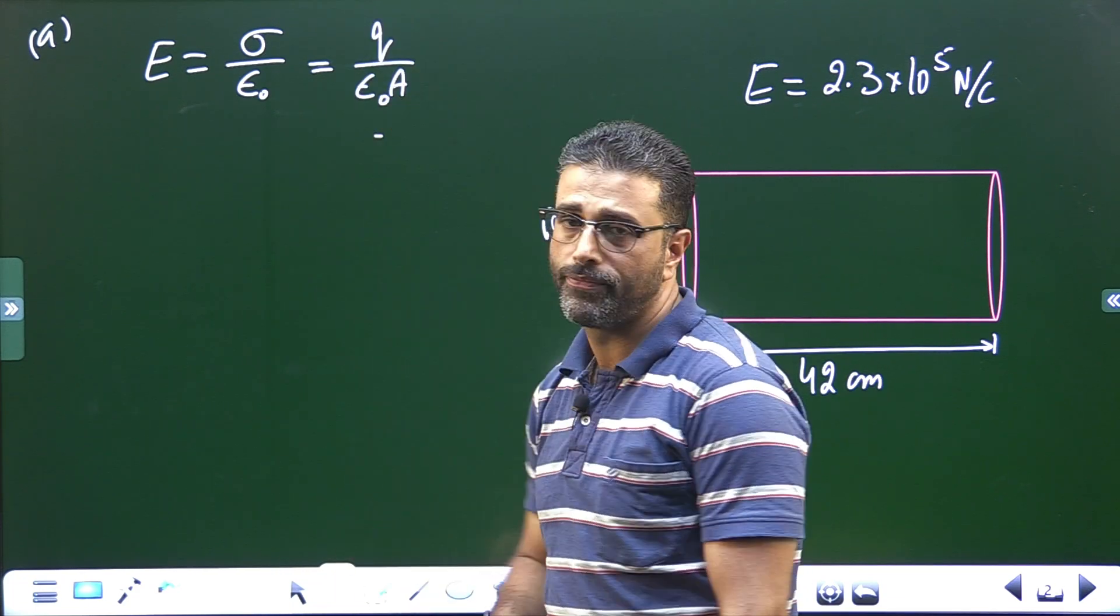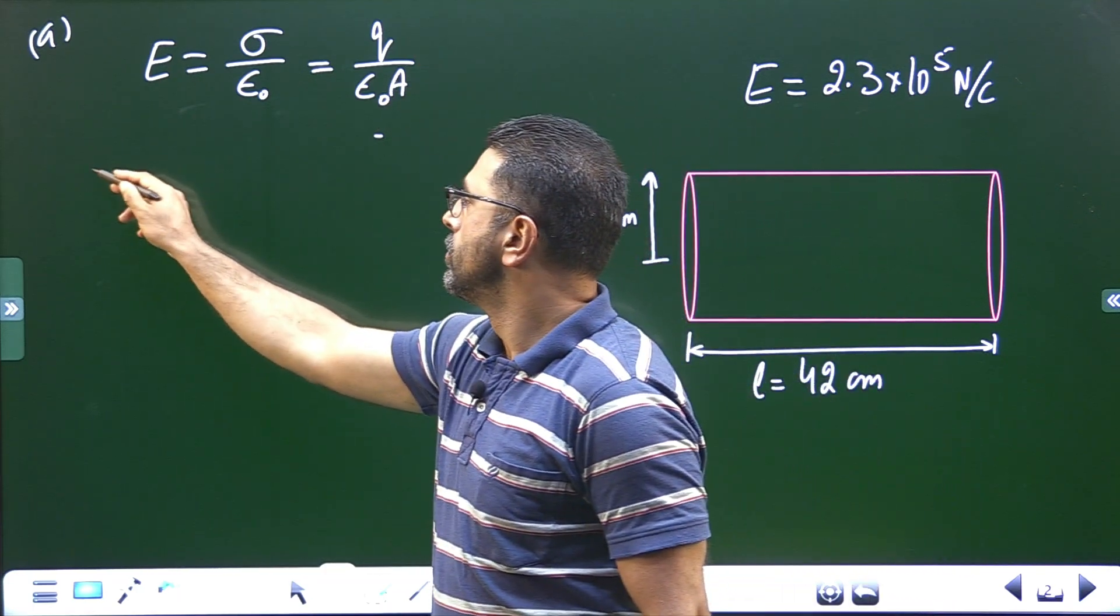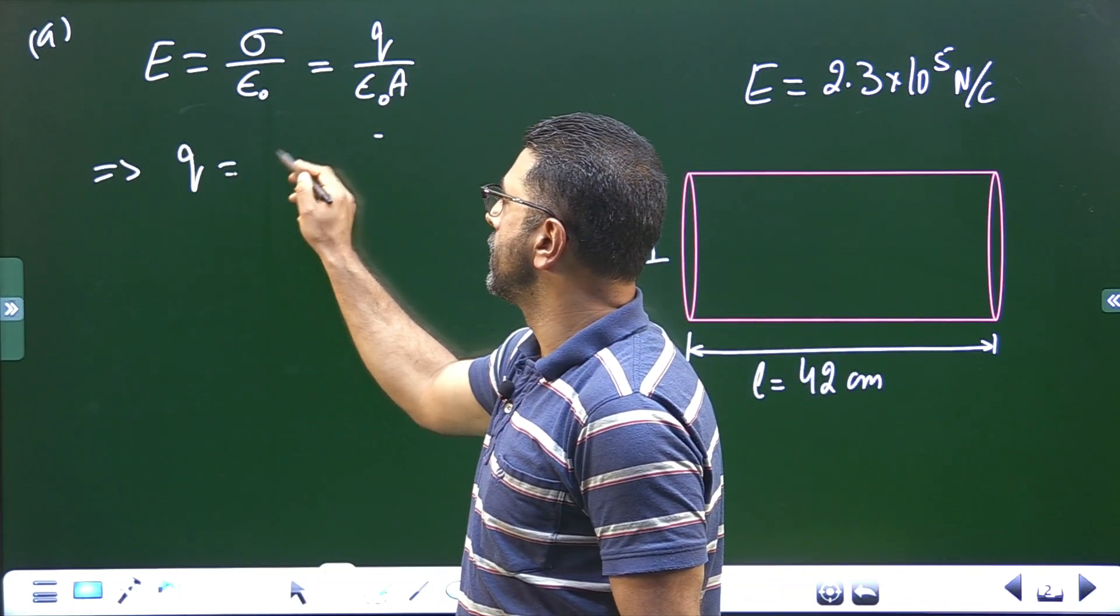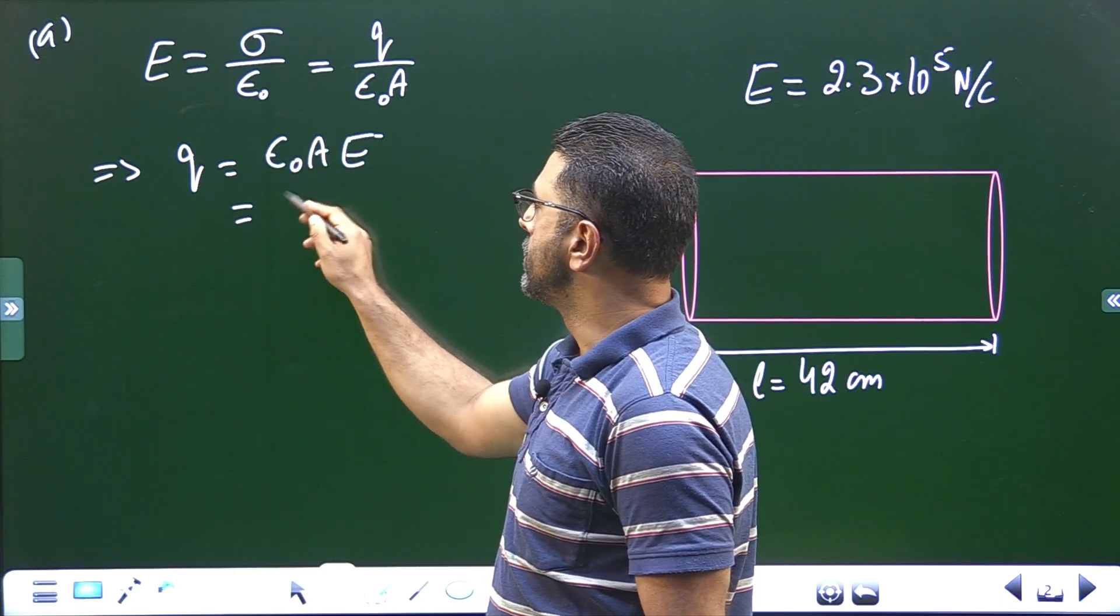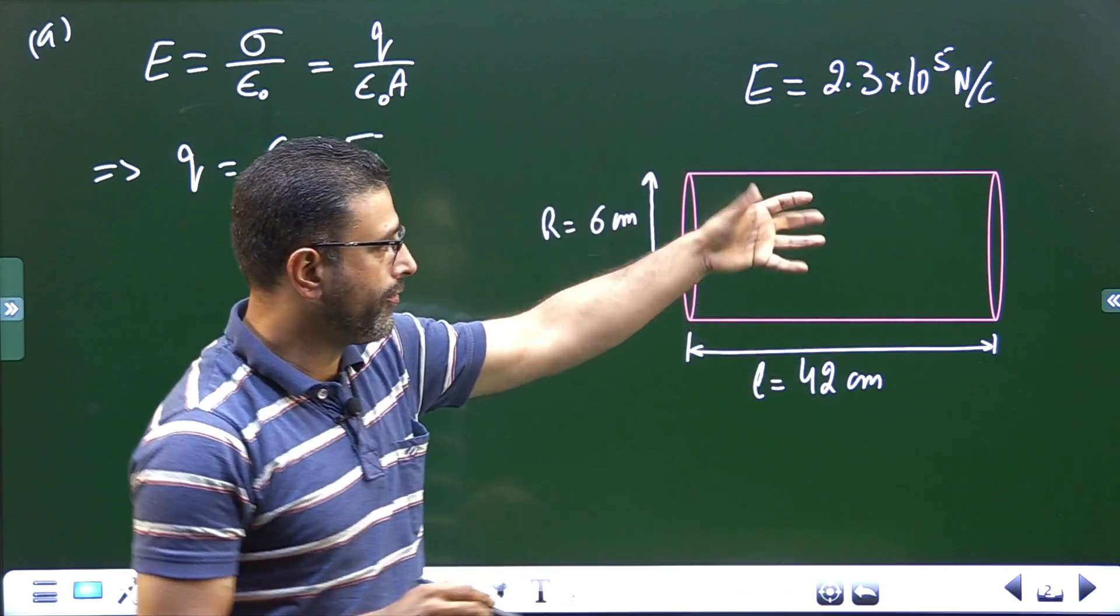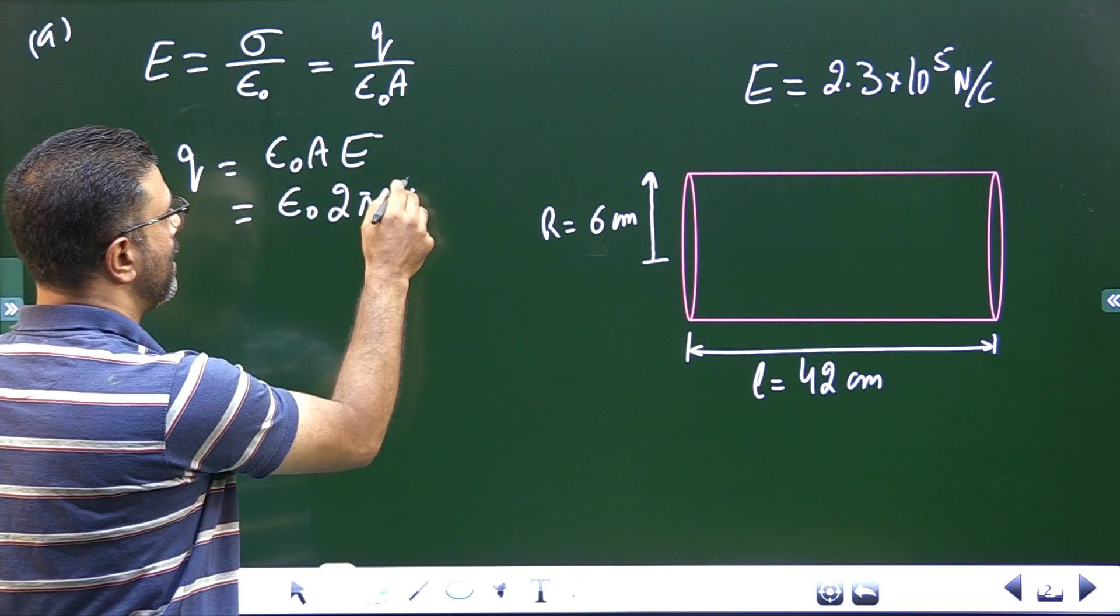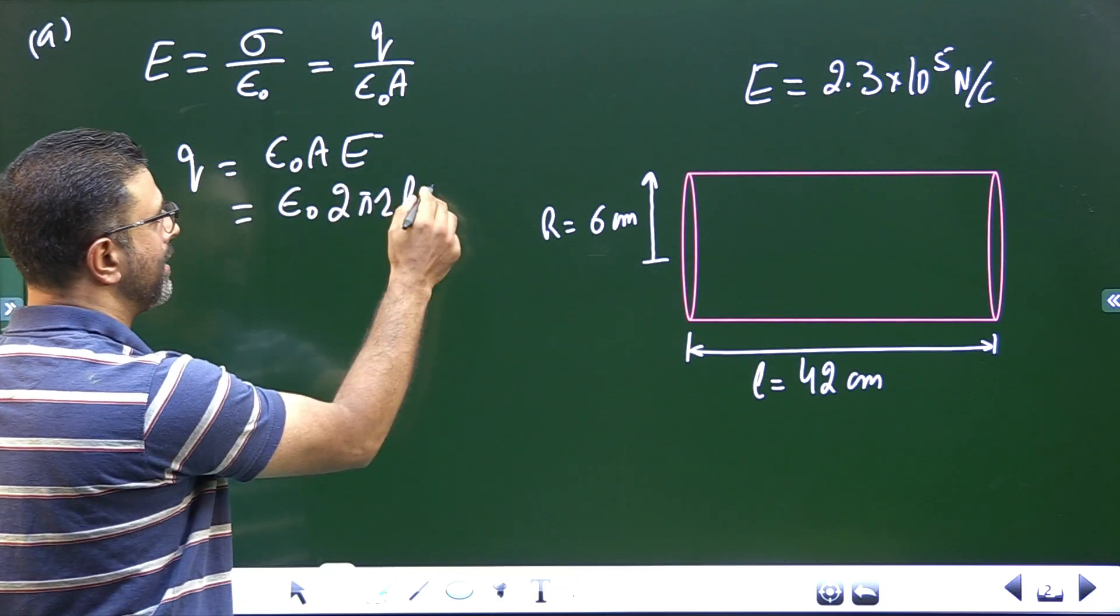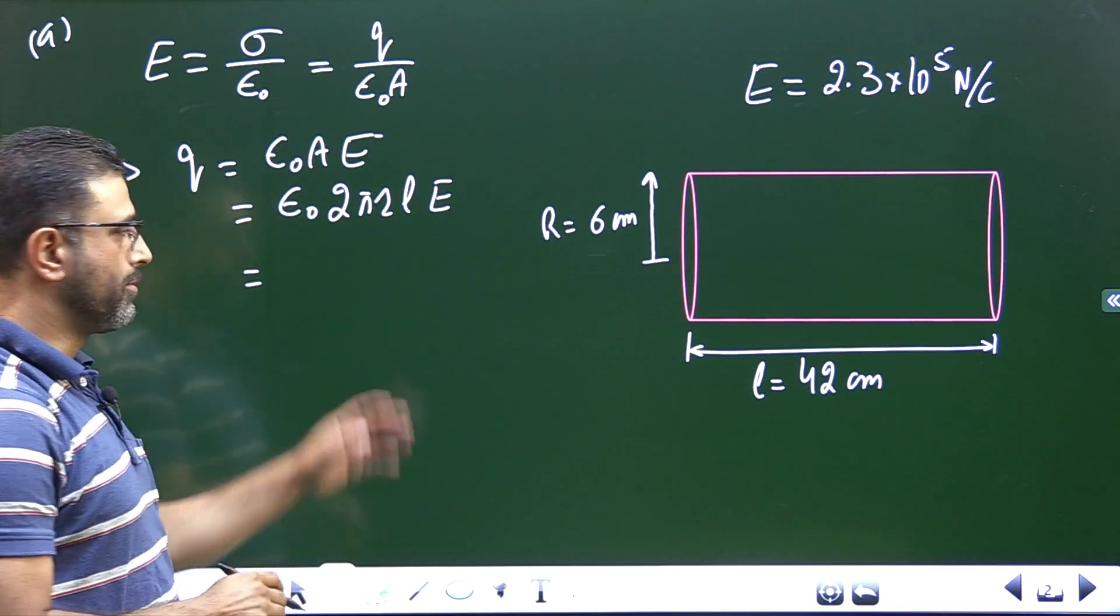And this Q is what we have to find out, total charge on the drum. So this implies Q = ε₀AE, which is ε₀ times surface area of a cylinder 2πRL times E. Let's substitute the values, we'll substitute everything in SI system.